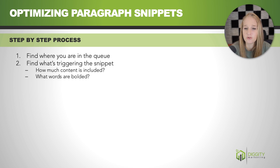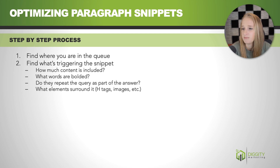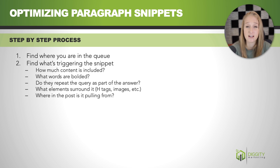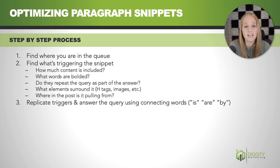Also check if there are any bolded words — if they're not bolded on the actual page, Google thinks they're important enough to bold them themselves. Check whether they repeat the query as part of the answer or just answer the question. Look at the elements surrounding it — H tags, images — and look at where in the post the snippet is pulling from, because nine times out of ten with paragraph snippets it's going to be pretty high up, but not always. To optimize, you're going to answer the question using connecting words, essentially repeating the query back at Google and providing the answer all in a single sentence — something standalone and quotable.